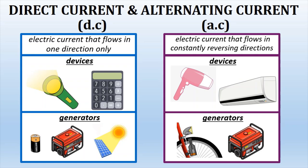For power stations, the majority produce AC. The exception is electricity generated from solar energy, which produces DC.